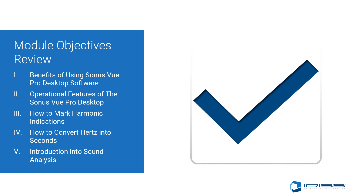This completes our module on how to use the Sonus Vue Desktop Pro. In this module, we covered the benefits of using Sonus Vue Pro Desktop software, its operational features, how to mark harmonic indications, how to convert hertz into seconds, and a brief introduction into sound analysis. For more training on sound analysis or sound theory, please consider taking our ISOCAT-1 ASU course.